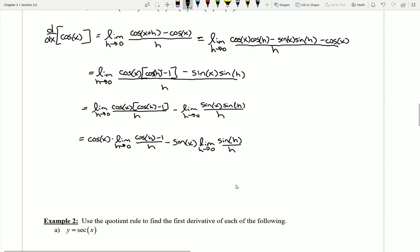Now I can make use of those two limits that we proved in the last video. I know that this first limit has a value of zero and this next limit has a value of one. And so this leaves me with zero minus the sine of x which gives me a grand total of minus sine of x. So the derivative of the cosine is negative sine.